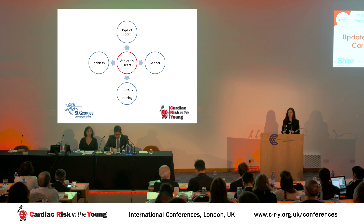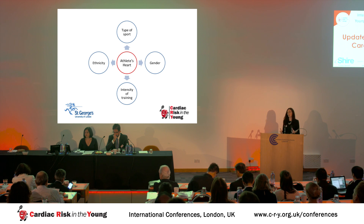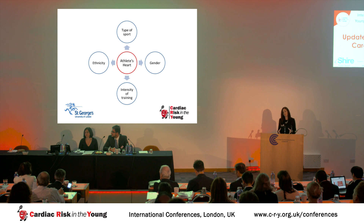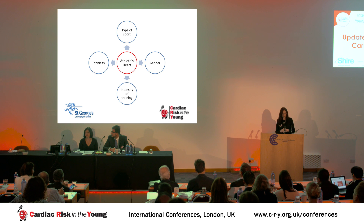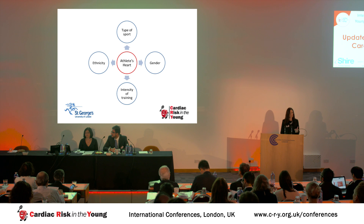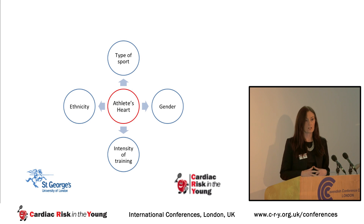The factors that determine the spectrum of athlete's heart are dependent on several things. Firstly, the type of sport the athlete undertakes — an endurance cyclist is going to have a very different heart to an Olympic weightlifter. Males tend to get more changes than females, although my colleague will talk about some of the work we've done recently at St. George's. Not surprisingly, the more intensity of training, the more likely you are to get these changes. A lot of the work done with Professor Sharma on ethnicity shows we see many changes particularly in athletes of Afro-Caribbean descent.